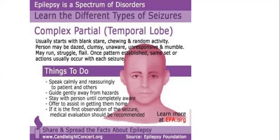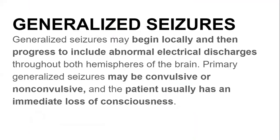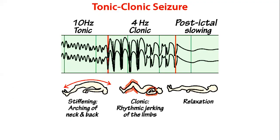In generalized seizures, abnormal electrical discharge affects entire hemispheres of the brain. It may be convulsive or non-convulsive — the non-convulsive type is even scarier, because the body may not shake at all, meaning nobody else would know the person is experiencing an epileptic attack, apart from the person themselves.